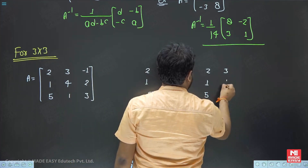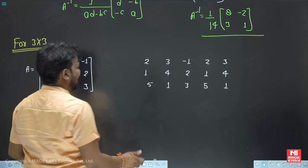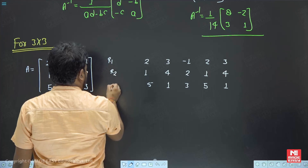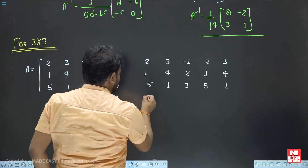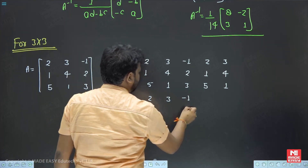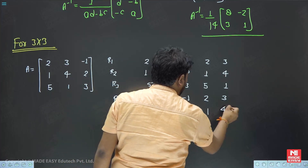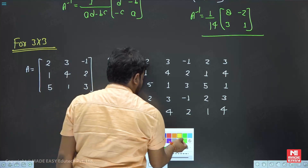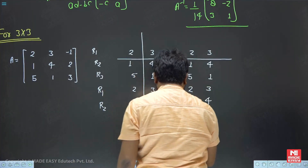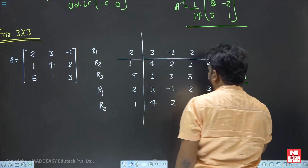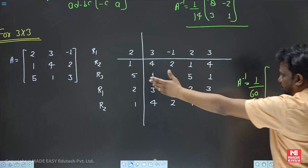So we have: first column, second column, third column, then first column repeated, second column repeated. This gives rows R1, R2, R3. Also note down R1 and R2 again: first row is [2, 3, -1, 2, 3] and second row is [1, 4, 2, 1, 4]. Now draw a line and write A inverse directly. A inverse equals adjoint A divided by the determinant, and the determinant of this matrix is 60.